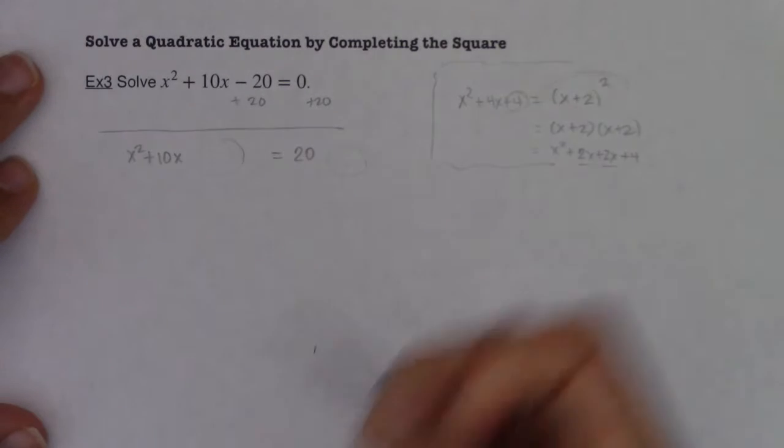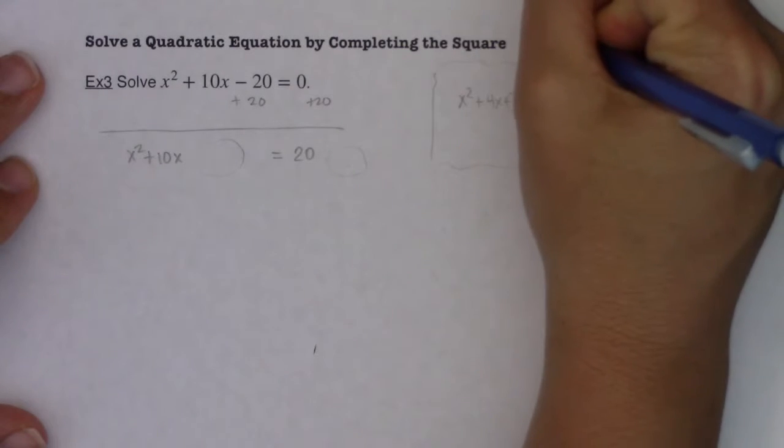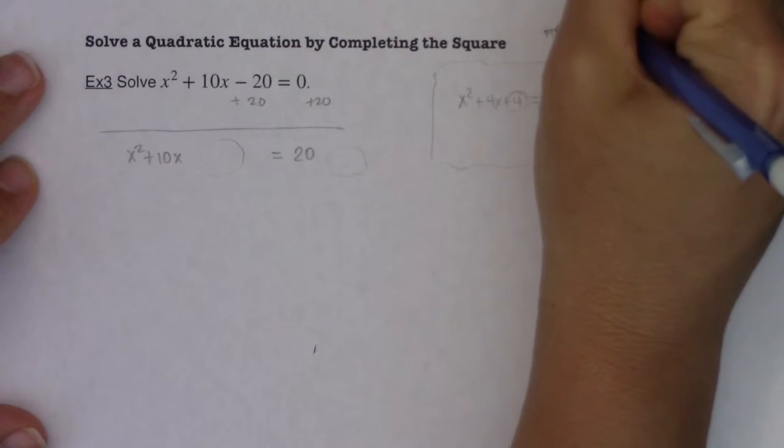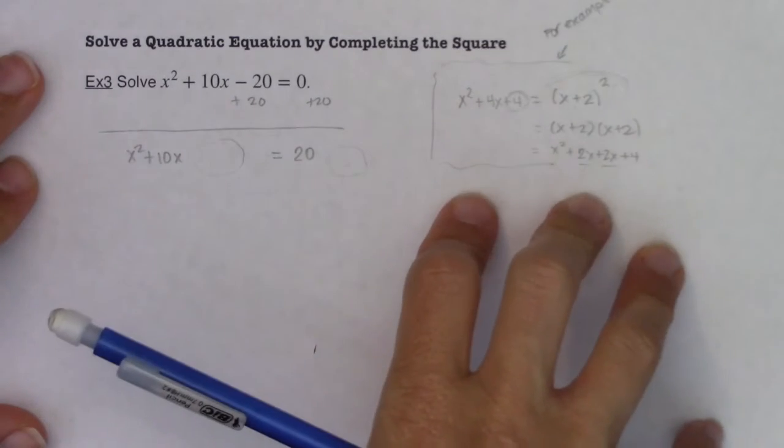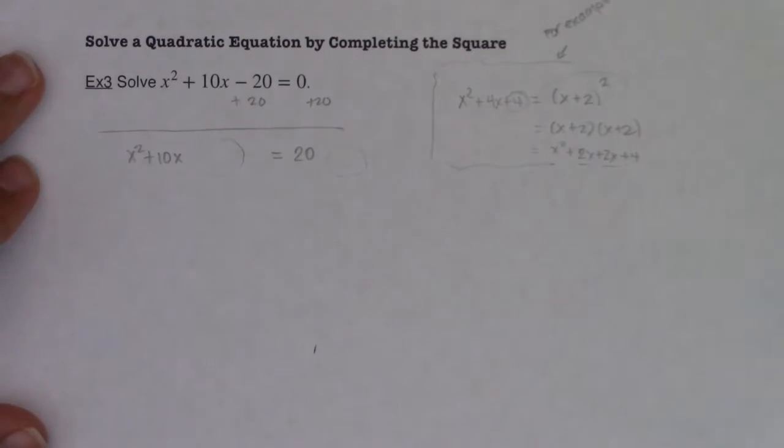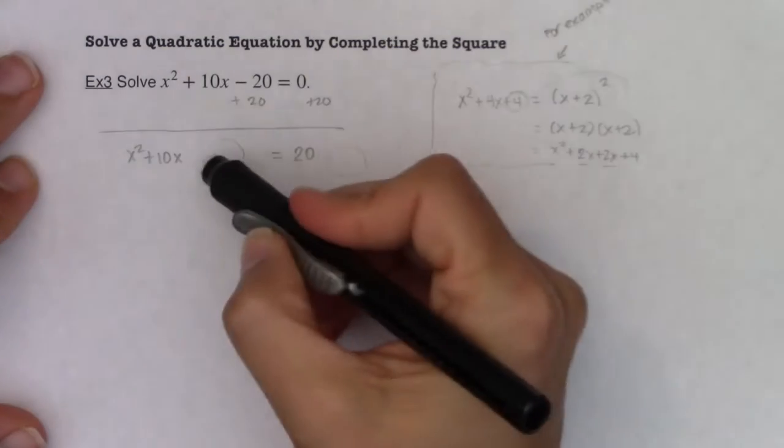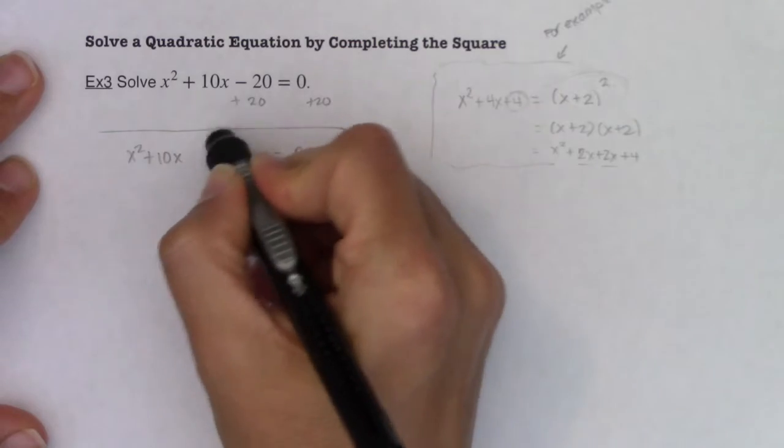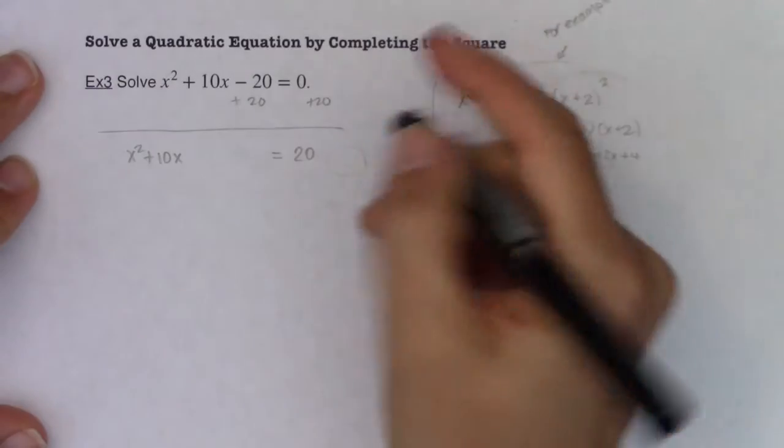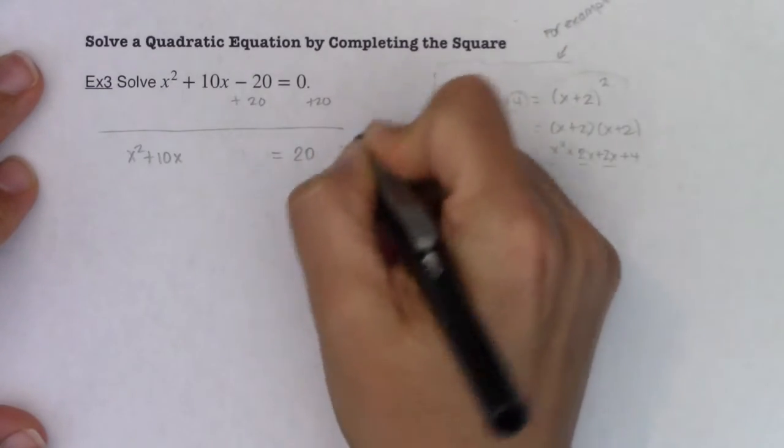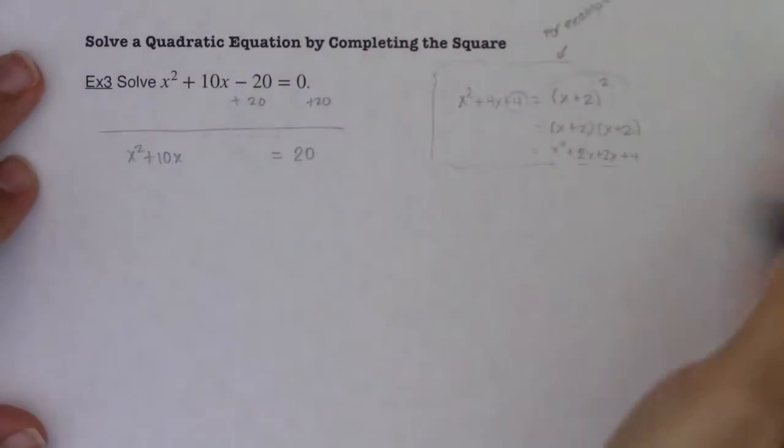So here's the mechanics. And again, this was just an example, for example, it doesn't have anything directly to do with this problem, other than I'm going to give you some mechanics here. So what we're going to do to determine this number, all right, and I'm going to erase this circle. To determine this number, you always take the number in front of the linear term, you take half of it and square it.